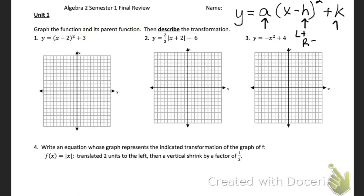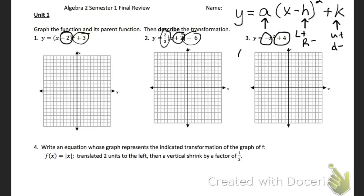And then K is your up and your down. Looking at problem 1, this says that we went right 2 and up 3. Problem 2 says we went left 2, down 6, and compressed by 2 thirds. And problem 3 says up 4 and reflect — so this would mean that it would flip over.